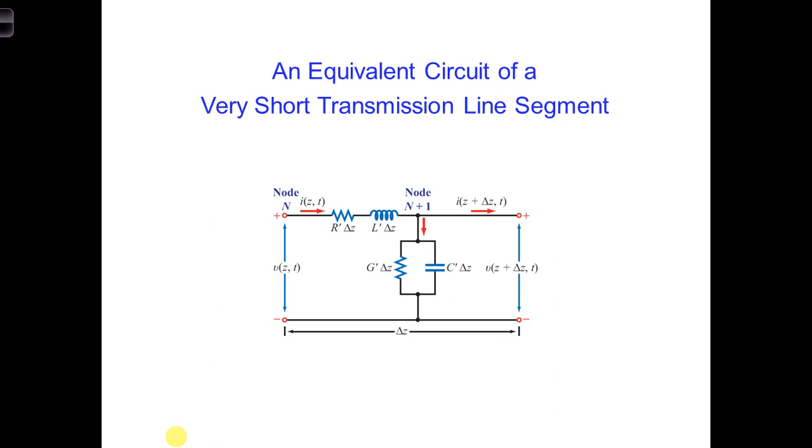This slide shows the complete equivalent circuit for a delta z segment of transmission line. It has the inductor and capacitor as before, with the two resistors that we just added. This type of equivalent circuit is called an L junction equivalent circuit because of how the circuit elements are laid out, like an upside down L.